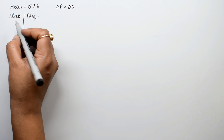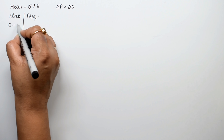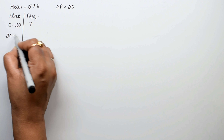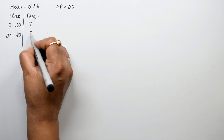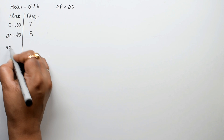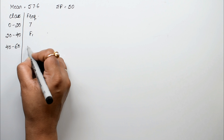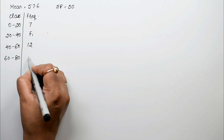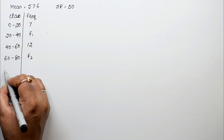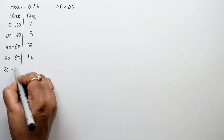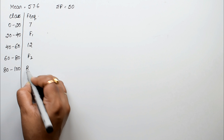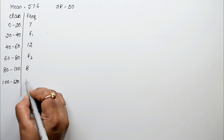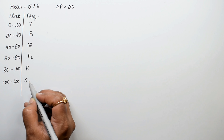The class intervals and frequencies are: 0–20 with frequency 7, 20–40 with frequency f1, 40–60 with frequency 12, 60–80 with frequency f2, 80–100 with frequency 8, and 100–120 with frequency 5. We need to find f1 and f2.